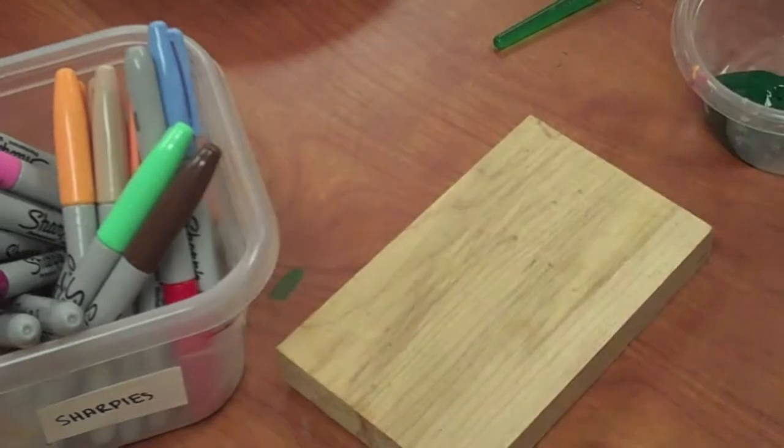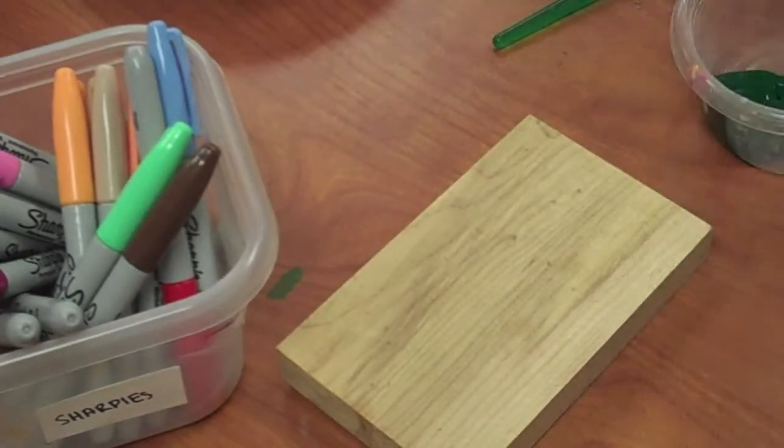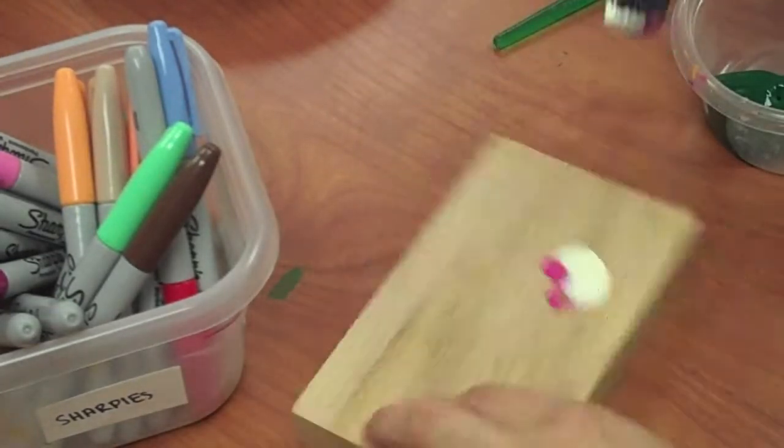On cardboard and wood, you can try liquid tempera paint, acrylic paint, or permanent marker.